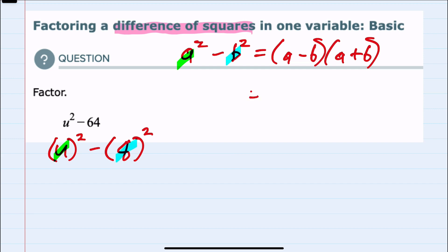So the difference of two squares, substituting in those a's and b's, we have our a is u minus b, which is 8.